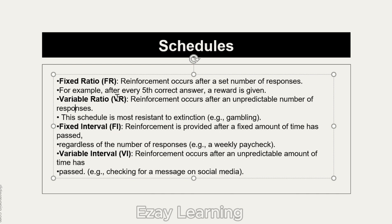Fixed interval (FI) reinforcement is provided after a fixed amount of time. For interval schedules, we focus on time, not responses. For example, FI10 means the client receives reinforcement after every 10 minutes, regardless of the number of responses.